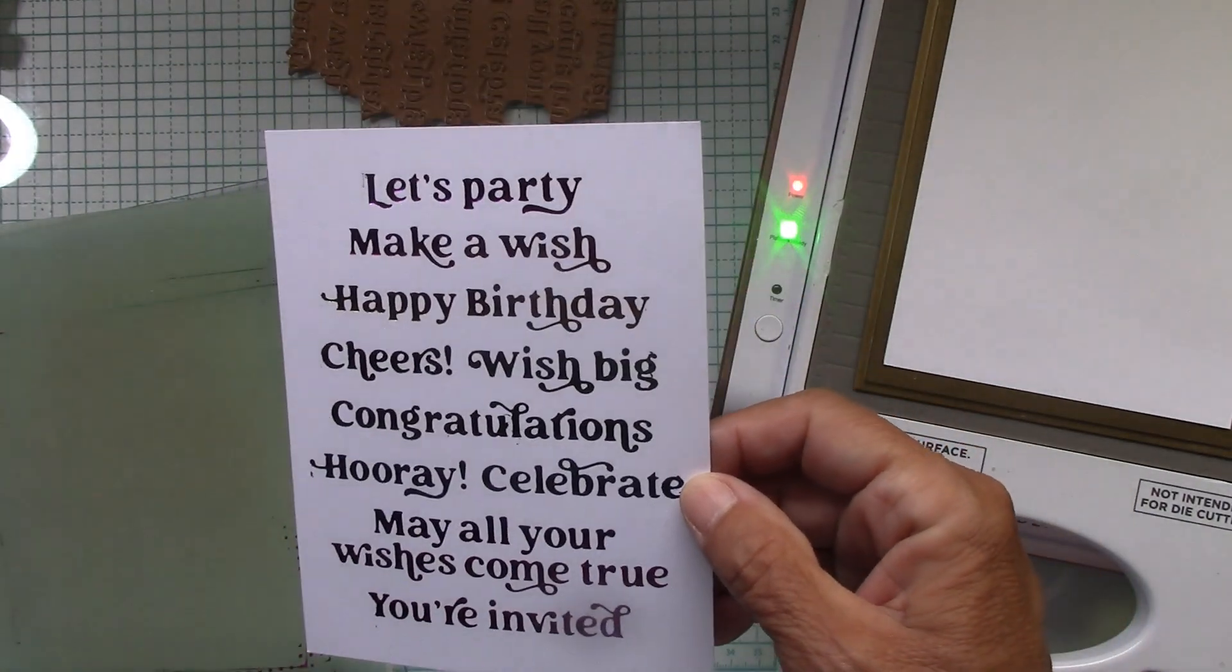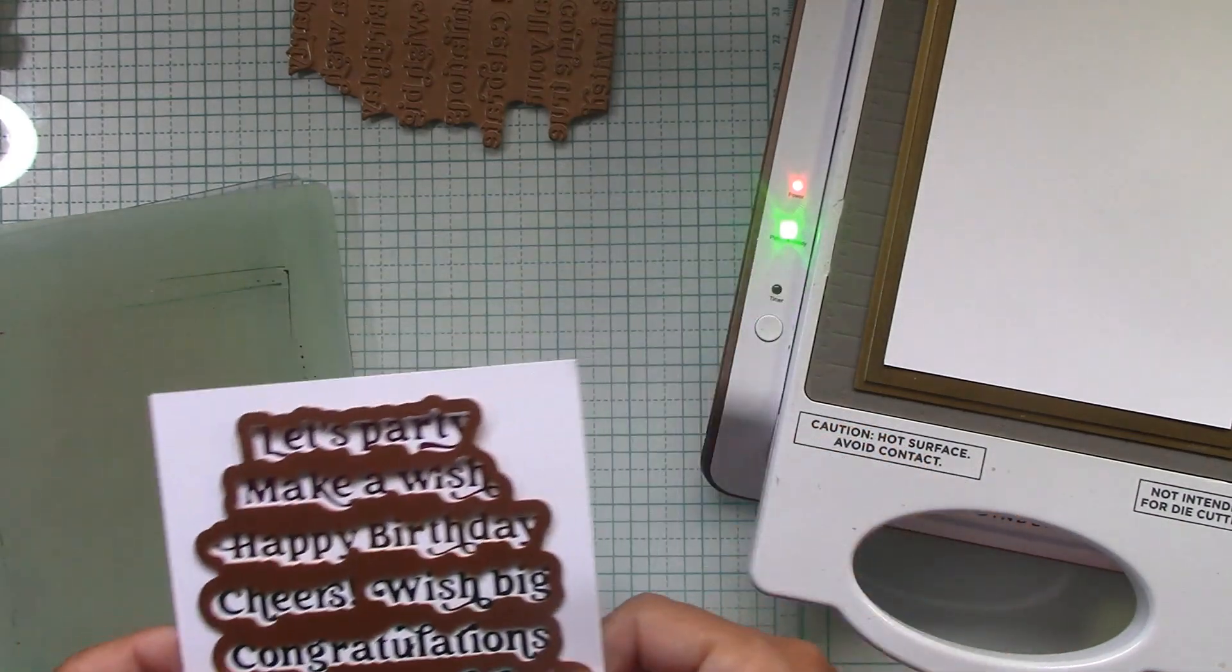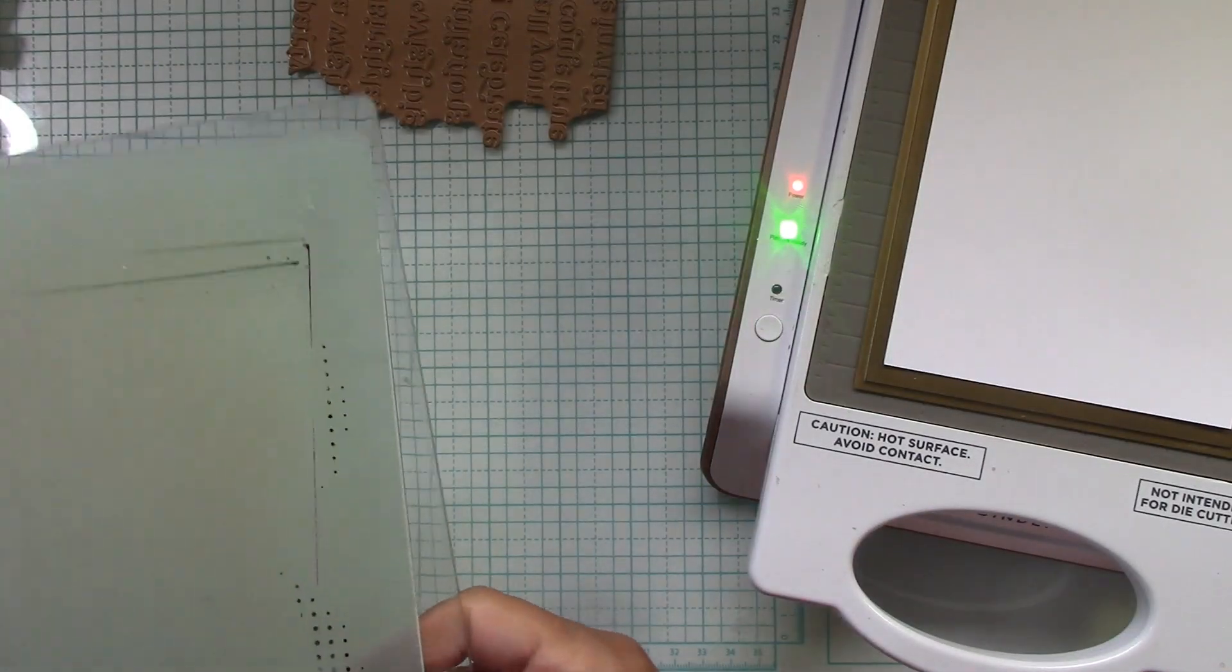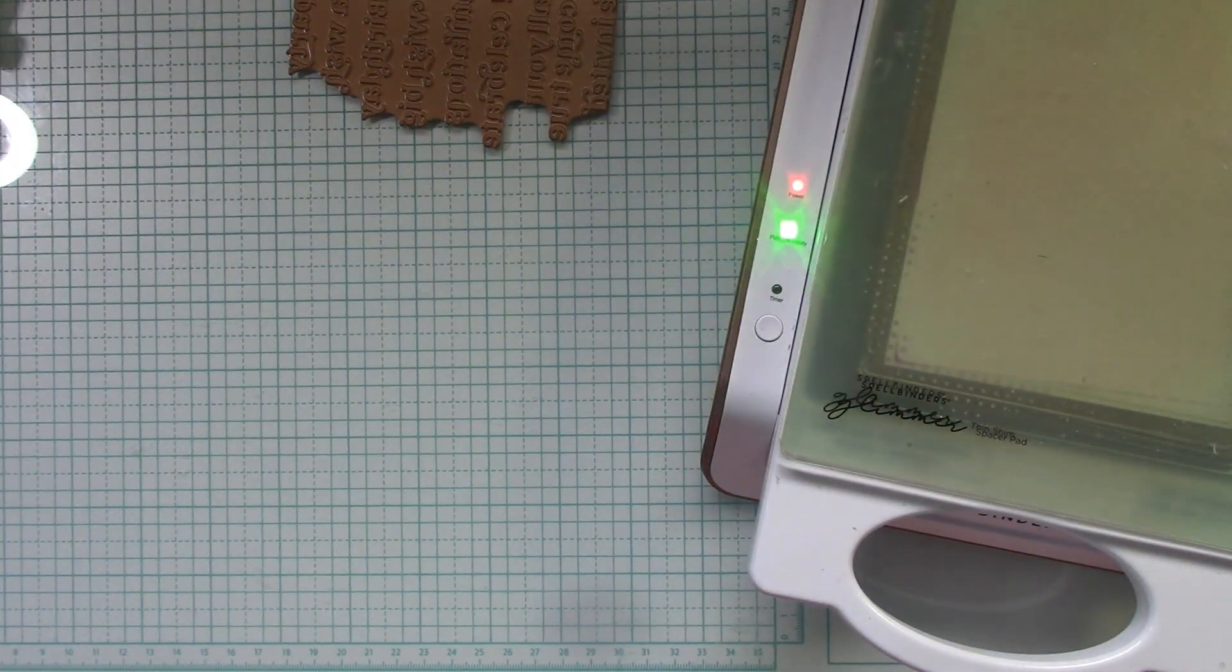Look, are we happy or what? That's gorgeous. And we have dies. Oh I love that. We're going to cut that out in just a minute. I'll wait for this to stop blinking. Let me put my sandwich together here. Thin shim, spacer pad, and I'll be right back.